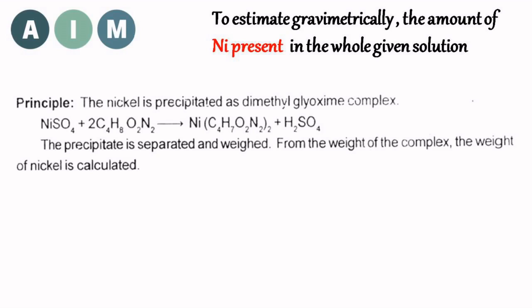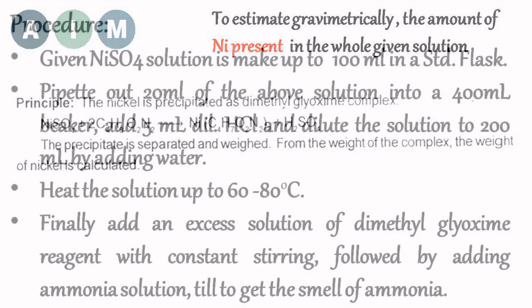Let us discuss the principle. The nickel is precipitated as dimethyl glyoxime complex. Nickel sulphate plus dimethyl glyoxime gives nickel dimethyl glyoximate plus sulphuric acid. The precipitate is separated and weighed, and from the weight of the complex, the weight of nickel is calculated.